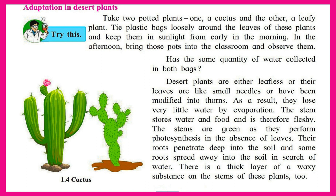Desert plants are either leafless, or their leaves are like small needles, or have been modified into thorns. As a result, they lose very little water by evaporation. The stem stores water and food, and is therefore fleshy. The stems are green as they perform photosynthesis in the absence of leaves.